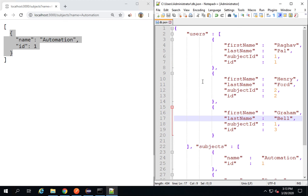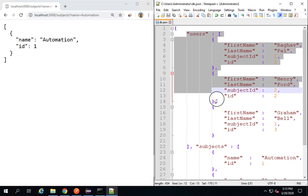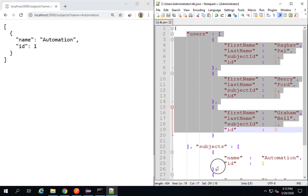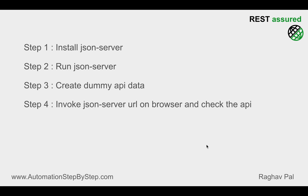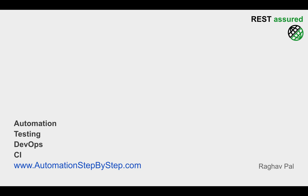We have created our dummy REST API on a local server and we are able to host and run it on our local system. In the next session, I will show you exactly how we can do testing on this API using different HTTP methods with REST Assured. We have our local API ready, and we will do the testing in the next session. I hope this session was useful for you. Thank you for watching.